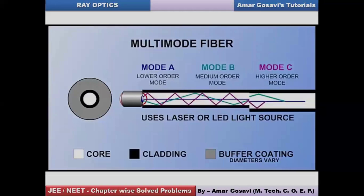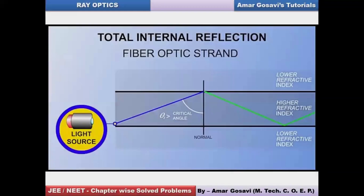The advantage of fiber optic communication is that signals do not lose their intensity and energy. The clarity of the signal is maintained even as it travels many kilometers.